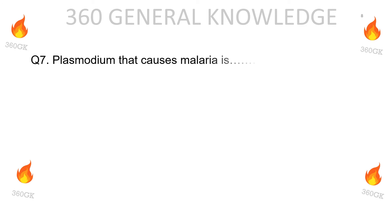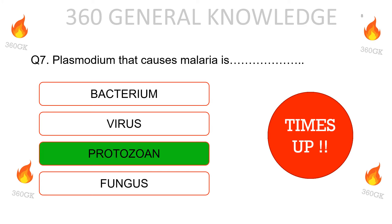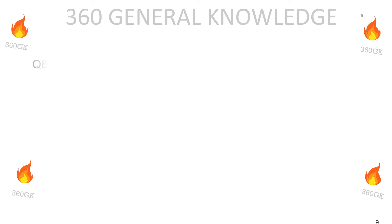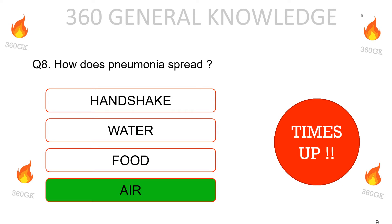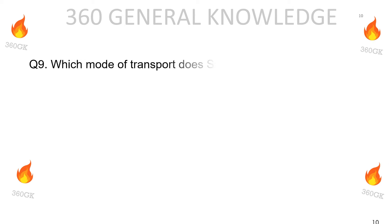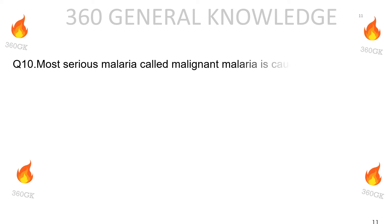Plasmodium that causes malaria is a: bacterium, virus, protozoan, or fungus. The correct answer is protozoan. How does pneumonia spread: handshake, water, food, or air? The correct answer is air. Which mode of transport does Salmonella typhi bacteria use: air and food, food and water, air and water, or plants and animals? The correct answer is food and water.